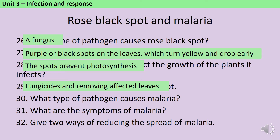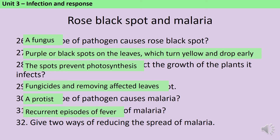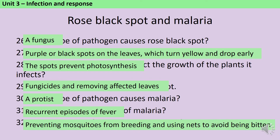Malaria is caused by a protist, and this protist has a double life cycle where it spends part of its life cycle in humans and part of it in mosquitoes. The symptoms of malaria include recurrent episodes of fever. To treat it we mainly need to stop you from getting bitten by mosquitoes, so we try to prevent the mosquitoes from breeding for instance by draining standing water, and also we use mosquito nets to avoid being bitten in the night.